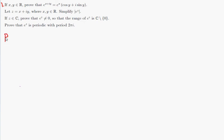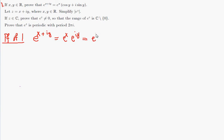Proof of number 1: x and y are real numbers. e to the x plus i y is equal to e to the x times e to the i y — that's a property of exponential functions, just using the law of exponents. This is equal to e to the x times, by a property we proved before, cosine of y plus i sine of y.